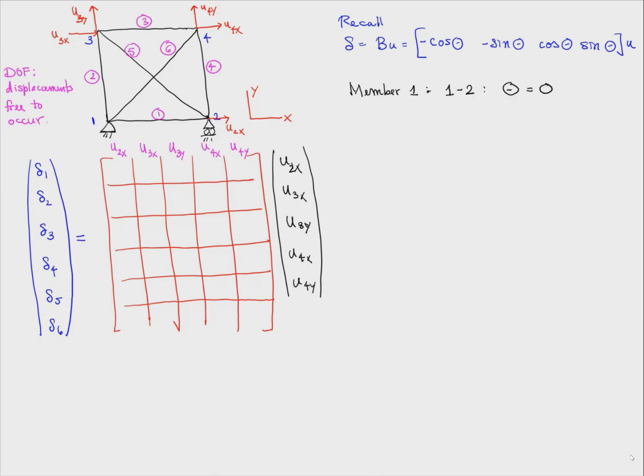So let's take member 1, which goes between joints 1 and 2. The angle theta is 0. So if we compute the B matrix and put it into this larger matrix, we just get 1 there.